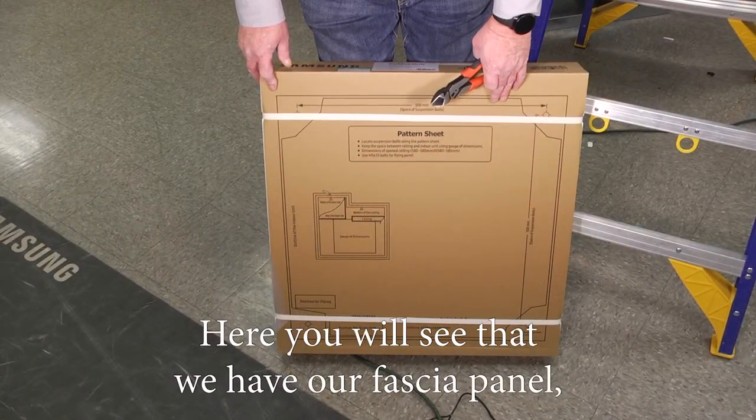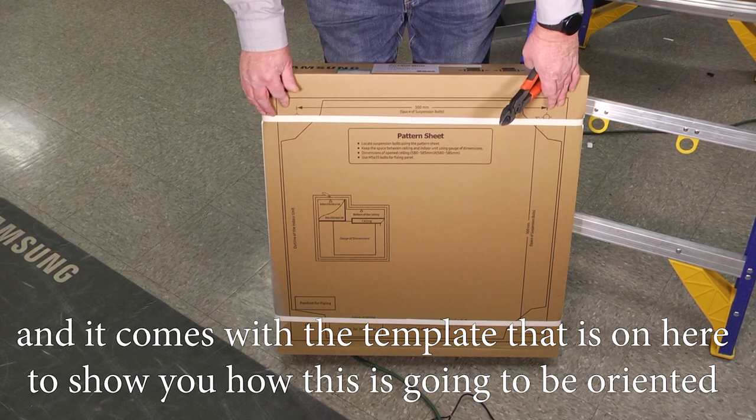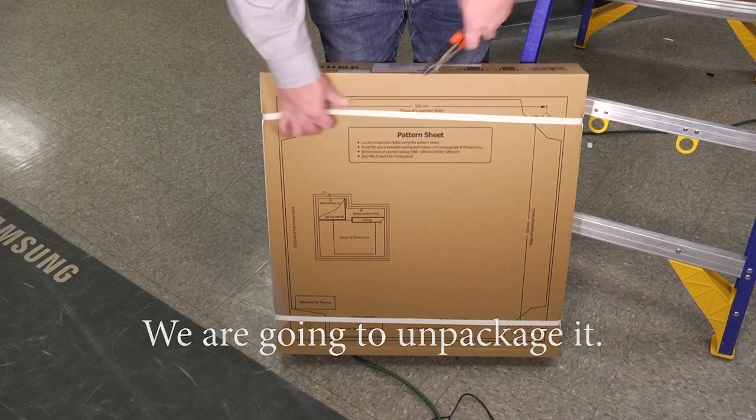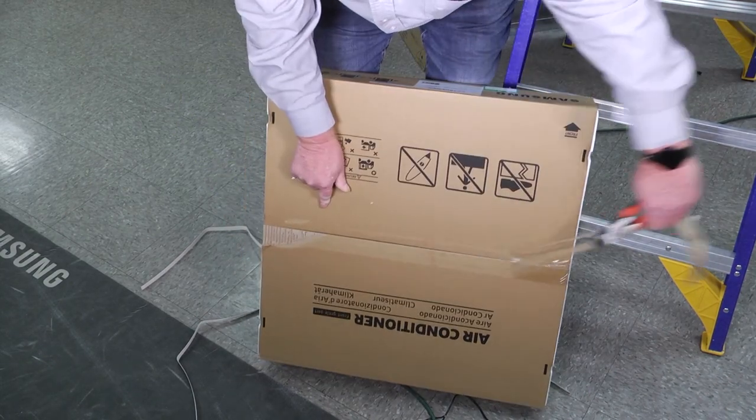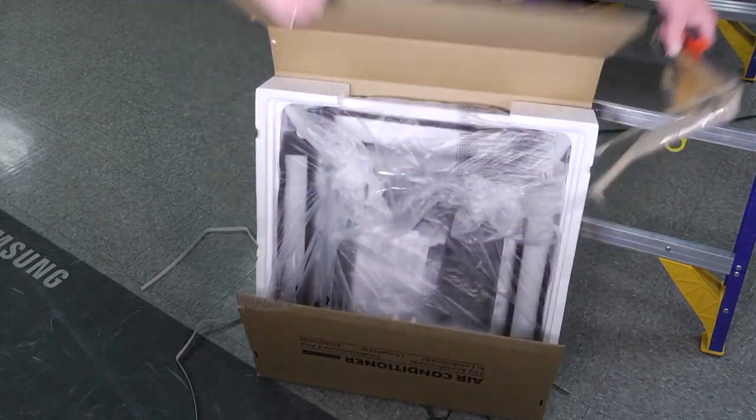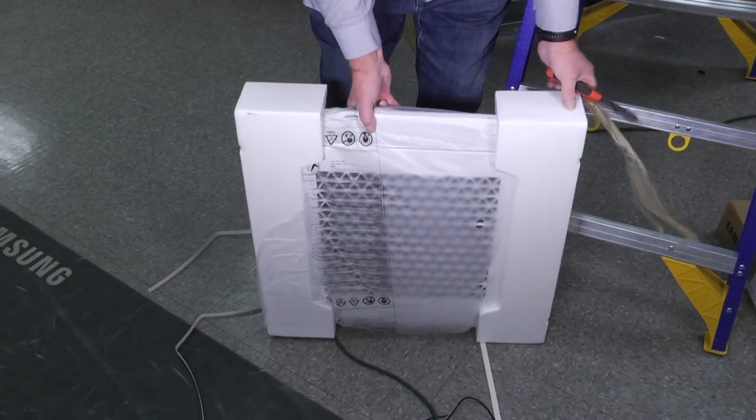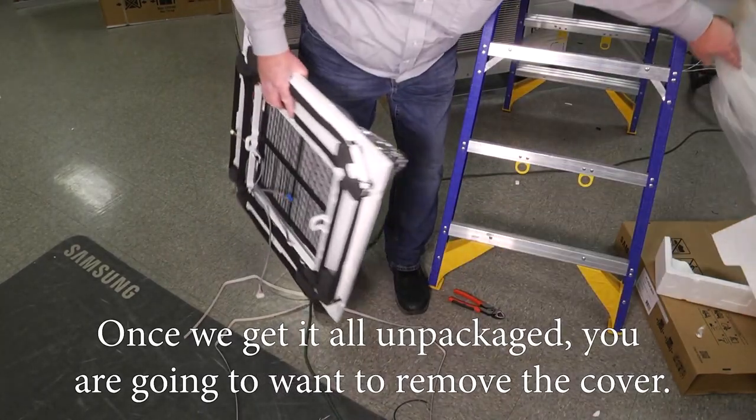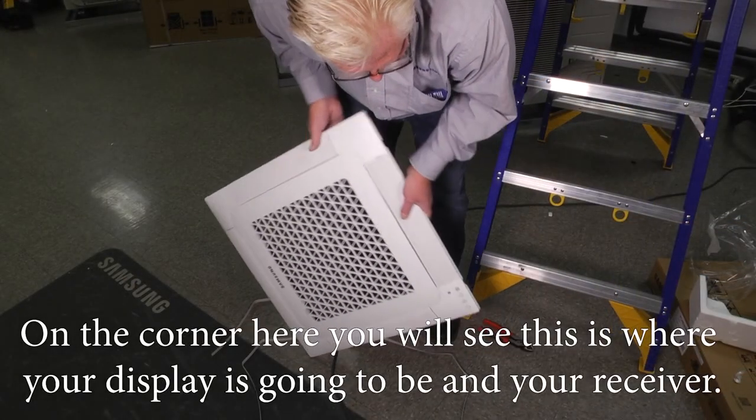Here you'll see that we have our fascia panel and this comes with the template that's on here to show you how this is going to be oriented with the holes up at the cassette to help you lay this out. We're going to unpackage it.